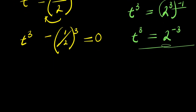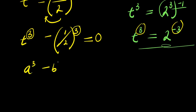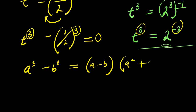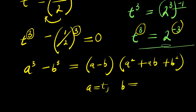At this particular point, we have power 3 here and power 3 here. We can expand this making use of the identity a cubed minus b cubed, which equals a minus b, times a squared plus ab plus b squared. Our a is t, while b is 1 over 2.